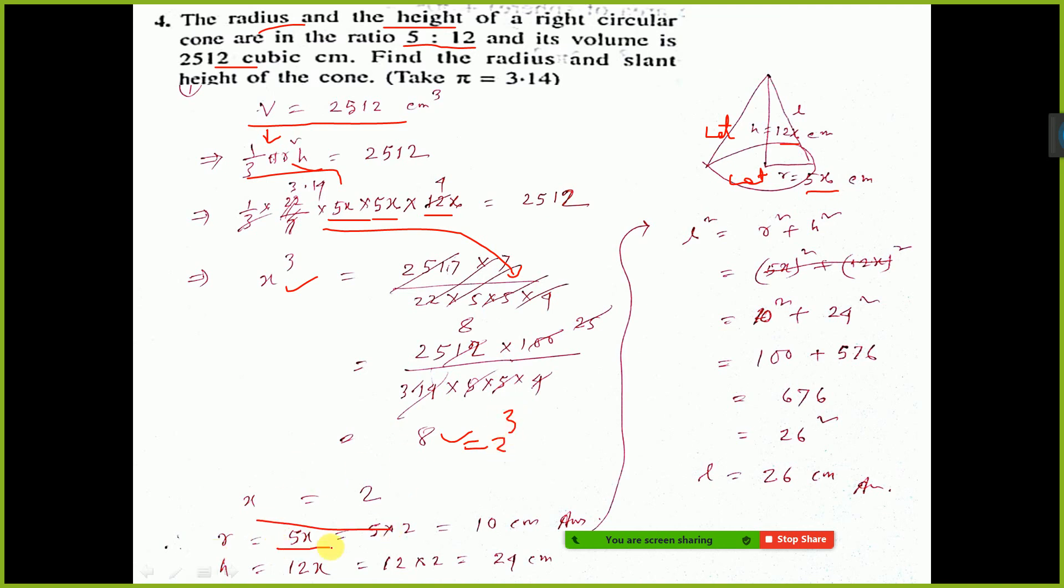Then, radius 5x, that is 5 into 2, 10 you are getting. And height 12x, that is 12 into 2, 24. That means you have got radius and height of this cone.